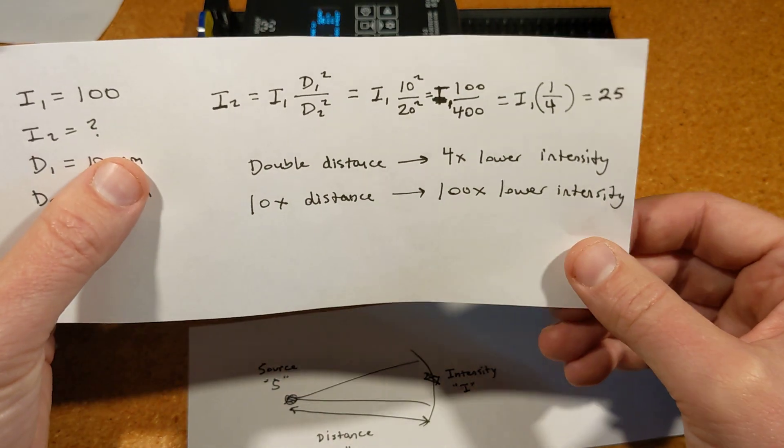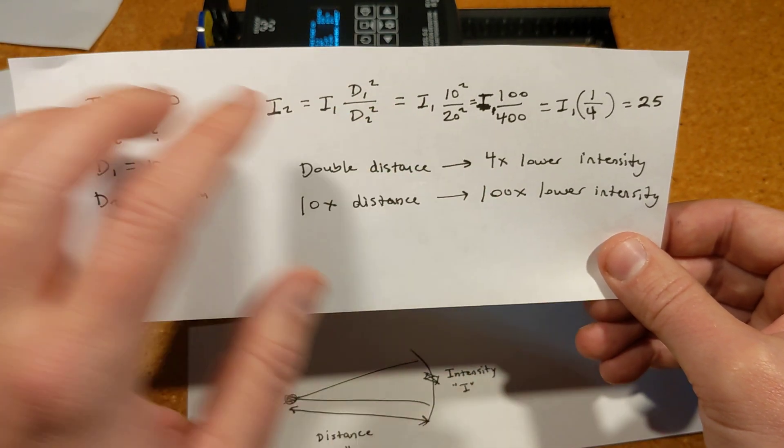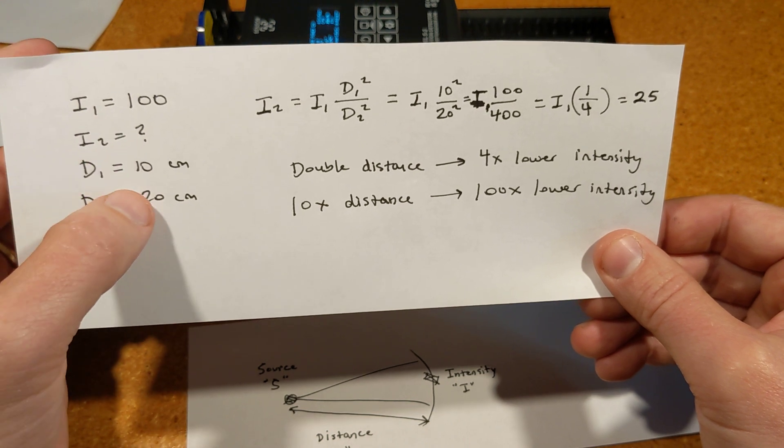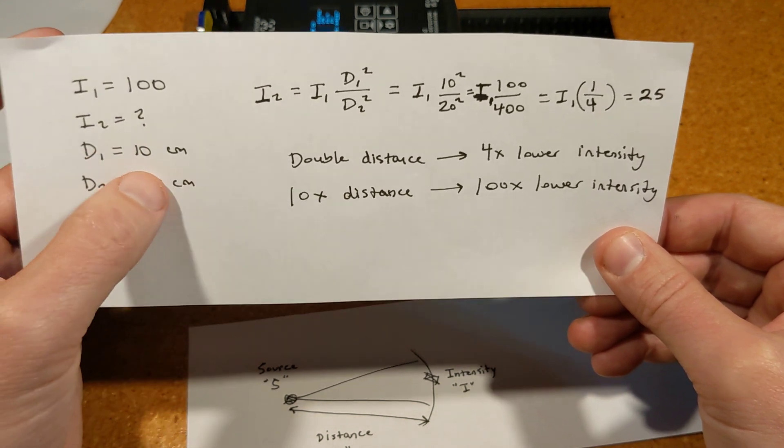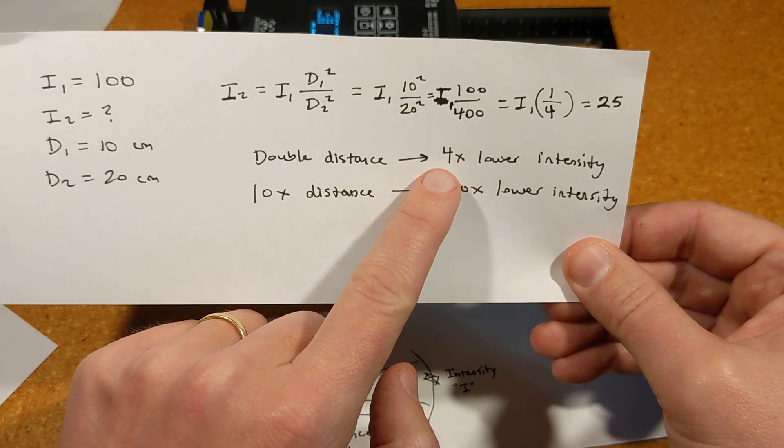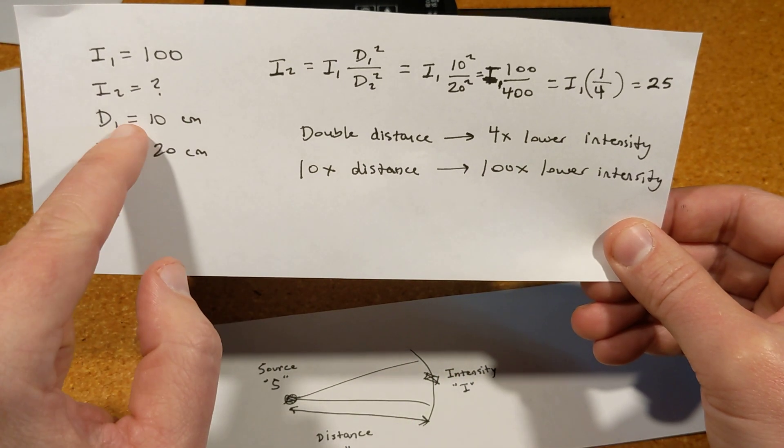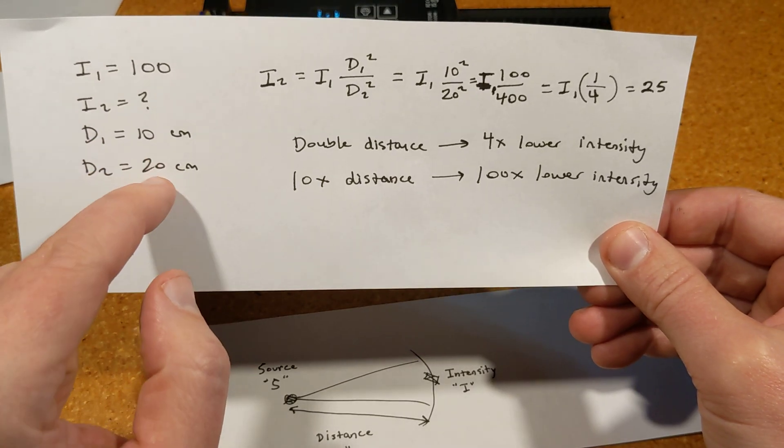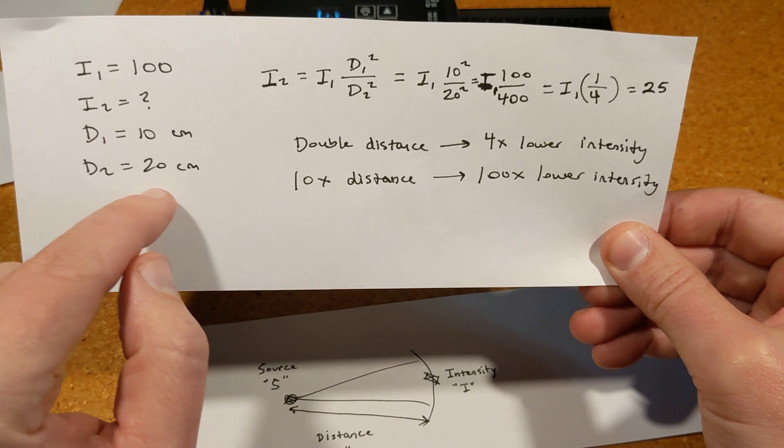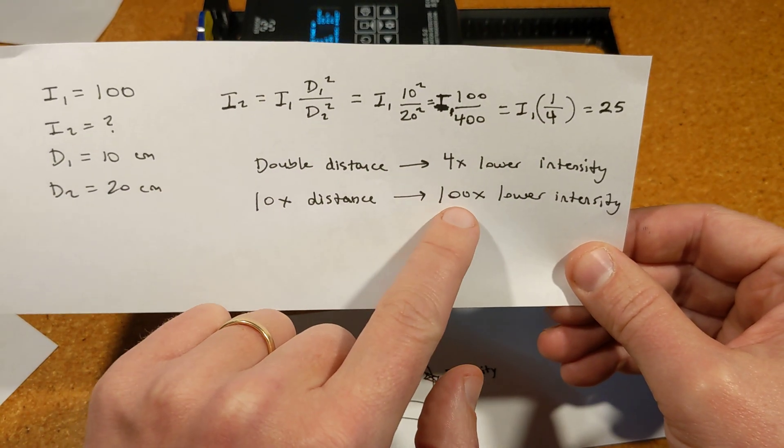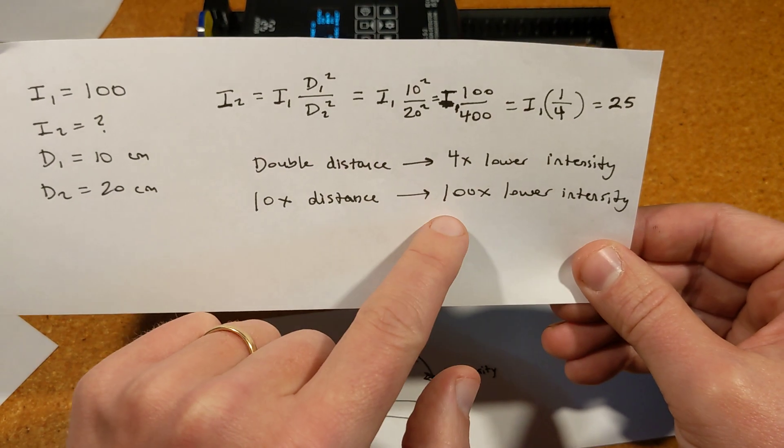This will hold true no matter which numbers are here - as long as the distance is double, you're always going to have four times lower intensity. If I did the same thing going from 10 to 100 or 20 to 200, or in any way 10 times more distance, you can put those numbers in and it'll come to 100 times lower intensity.